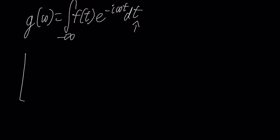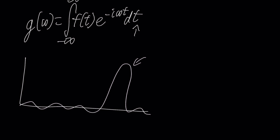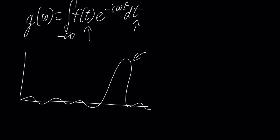So why is this useful? The Fourier transform of a function looks something like this. This spike here shows us one of the frequencies that comprises our original function. And there might be several spikes if the function is comprised of several frequencies, so it's telling us the frequencies that are important.